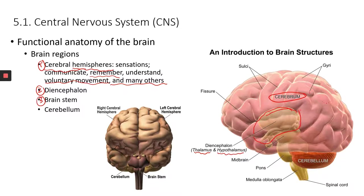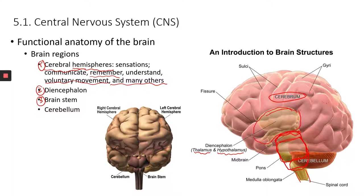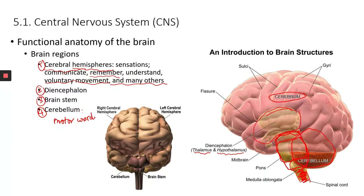The third region is the brainstem, which has three parts: the midbrain, the pons — which kind of sticks out — and the medulla oblongata. The brainstem connects the spinal cord to the brain. The last region is the cerebellum, which looks like a cauliflower and is involved in motor coordination and balance.